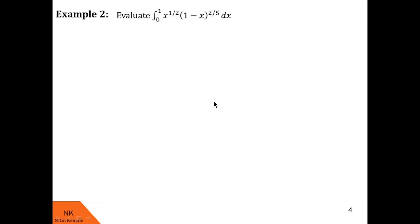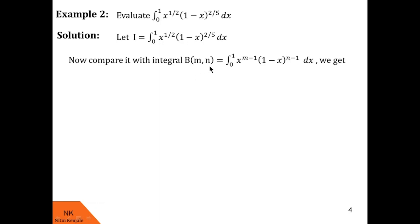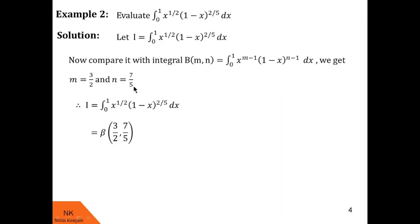Now let us evaluate the integral of x raised to half into 1 minus x raised to 2 by 5, dx over the limit 0 to 1. We label this integral as i, then compare it with the definition of beta of m, n. We find that m minus 1 is one-half and n minus 1 is 2 by 5, giving m equal to 3 by 2 and n equal to 7 by 5. Therefore, i equals beta of 3 by 2 comma 7 by 5.